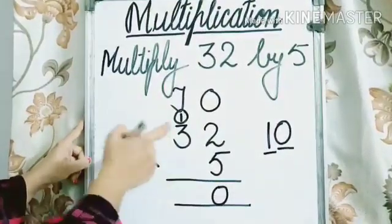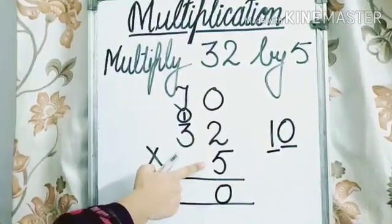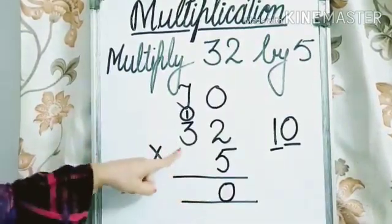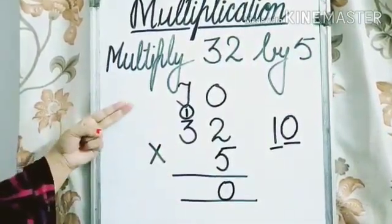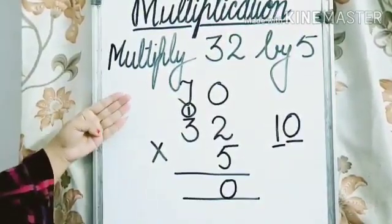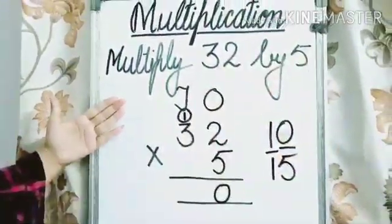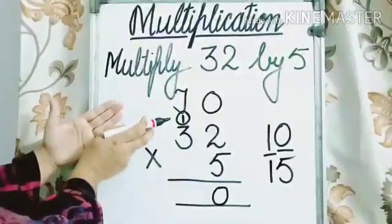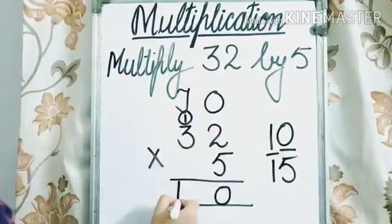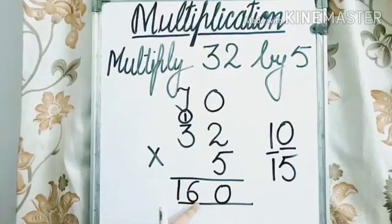Now step 2. Multiply the digit at the 10's place by 5. Means we need to multiply 3 by 5. 3 ones are 3, 3 twos are 6, 3 threes are 9, 3 fours are 12, and 3 fives are 15. So add carry over 1 in 15. 15 plus 1 is 16. And the product over here is 160.